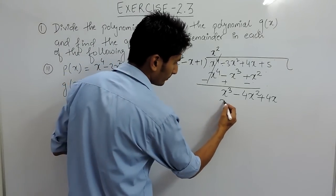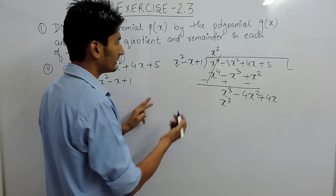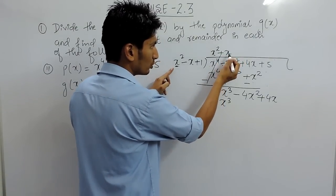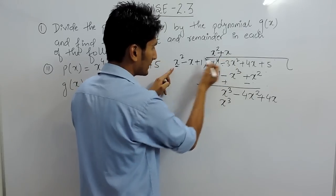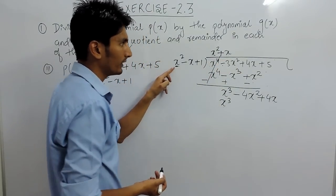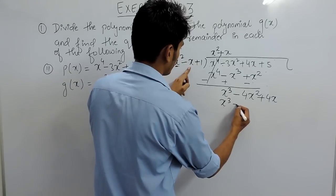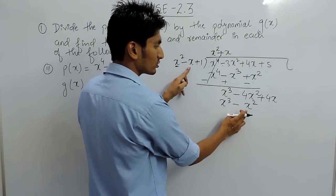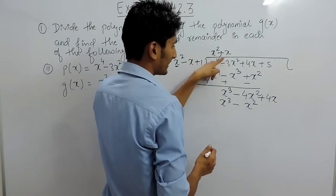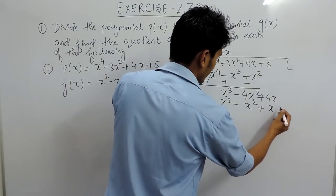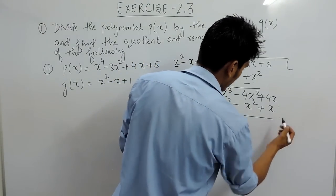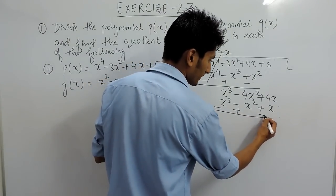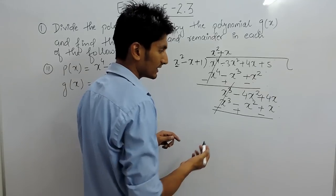Again you have to make x cubed. For that you have to multiply x squared with something — so obviously you need another x. So positive x multiplied by x squared is x cubed. After that multiply x by negative x to give minus x squared, because x multiplied by x is x squared with negative sign. And x multiplied by 1 is x. Again you have to subtract, so change the signs: this positive becomes negative, this negative becomes positive, this positive becomes negative.